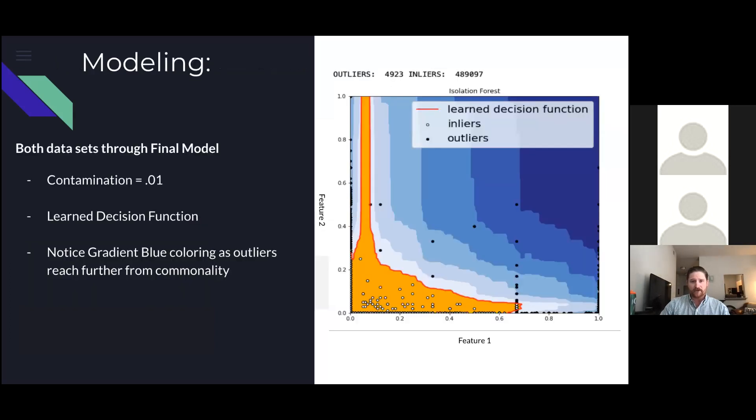After I determined which feature had the most influence in determining outliers, I set that as a hyperparameter for my model and ran my final data set through it. I set the contamination to 0.01 or 1%, and the graph to the right indicates the model's classification of inliers and outliers. The red line in the graph shows the model's learned decision function as it computes through the trees within the forest.